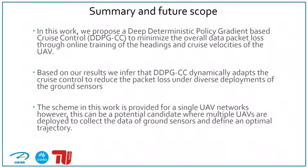In this work, we propose a deep deterministic policy gradient based cruise control to minimize the overall data packet loss through online training of the headings and cruise velocities of the UAV. Based on our results, the DDPGCC algorithm dynamically adapts the cruise control to reduce packet loss under different deployments. We also experimented on various deployments to verify which kind of distribution would be most effective for data collection. The scheme provided in this work is only applicable for single UAV networks; however, we believe it can eventually be a potential candidate where multiple UAVs — a swarm — are deployed to collect data from ground sensors and define an optimal trajectory.